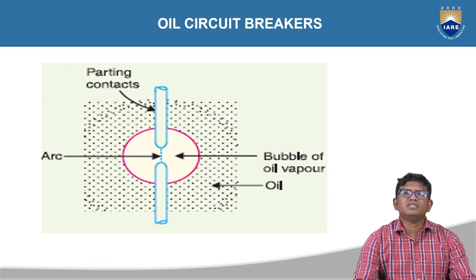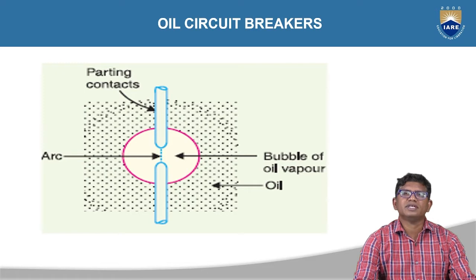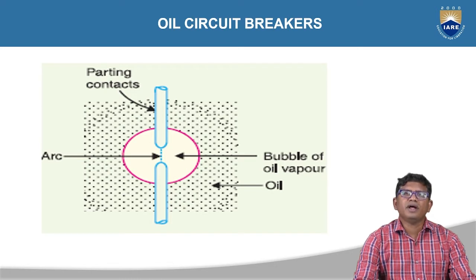The hydrogen gas occupies more space and has high thermal conductivity. It cools the arc. The dots between the two contacts represent the arc. Under abnormal conditions, when the moving contact is withdrawn from the fixed contact, arc is initiated between the contacts of the breaker. The arc is undesirable.